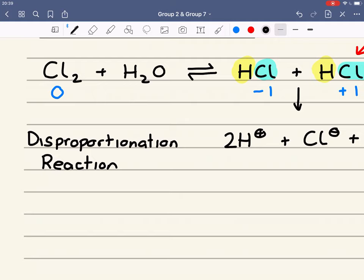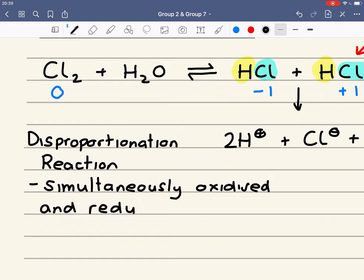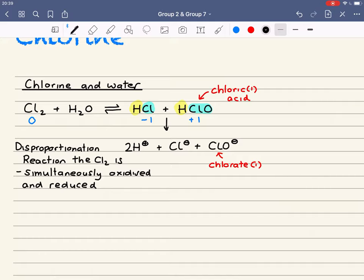So the chlorine has been simultaneously oxidized and reduced. And this is called a disproportionation reaction. A disproportionation reaction when a species is simultaneously oxidized and reduced. It's the chlorine in this case. The Cl2 is simultaneously oxidized and reduced.